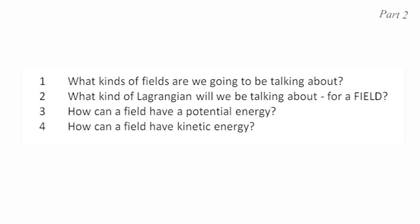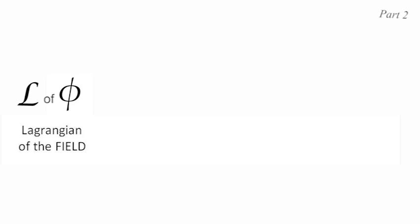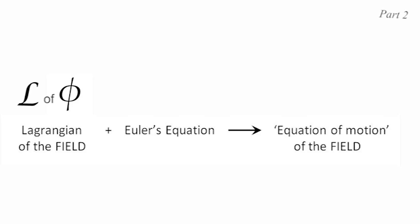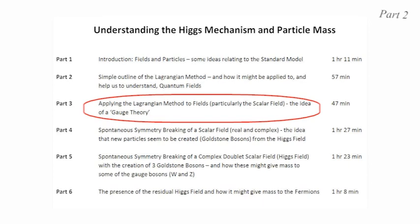So we have now answered the four questions that seemed to stop us creating a Lagrangian density for a field — in our case for a scalar field. The next thing we need to do is create a simple scalar Lagrangian density using these ideas, then explore the mechanics of the field to learn something. This will hopefully lead us to understand the Higgs field and the Higgs mechanism, and help answer why the W and Z bosons have mass where the standard model suggests they should be zero. All this will be explored in the next video, part three.